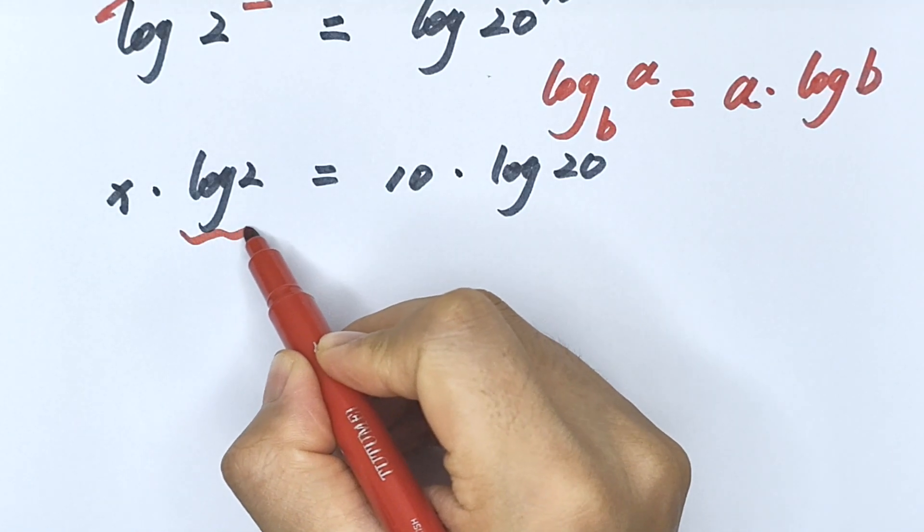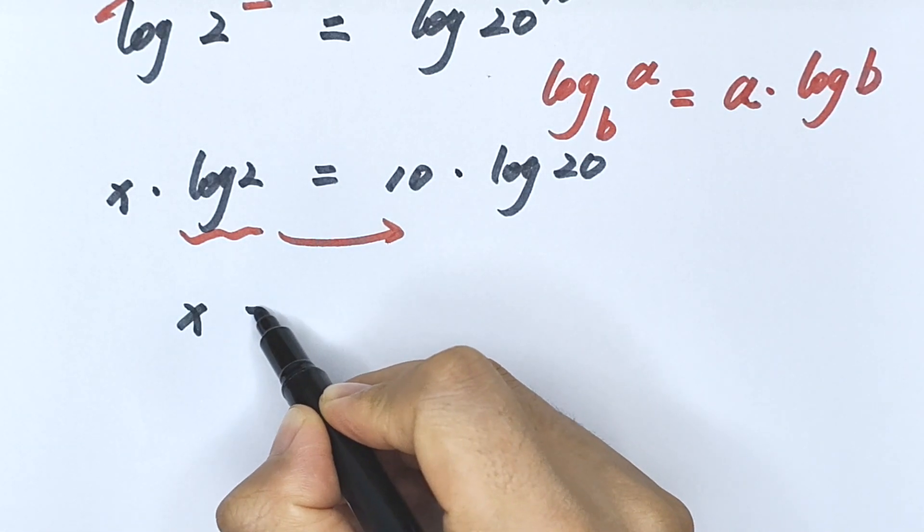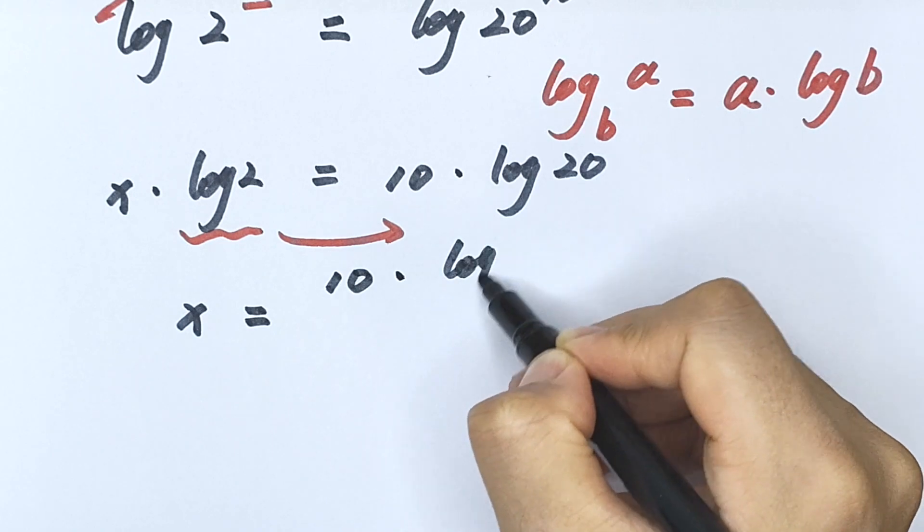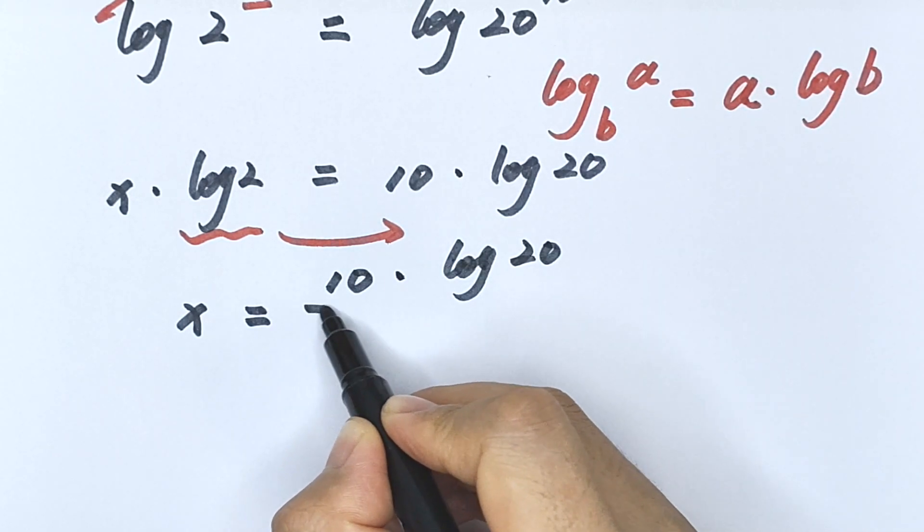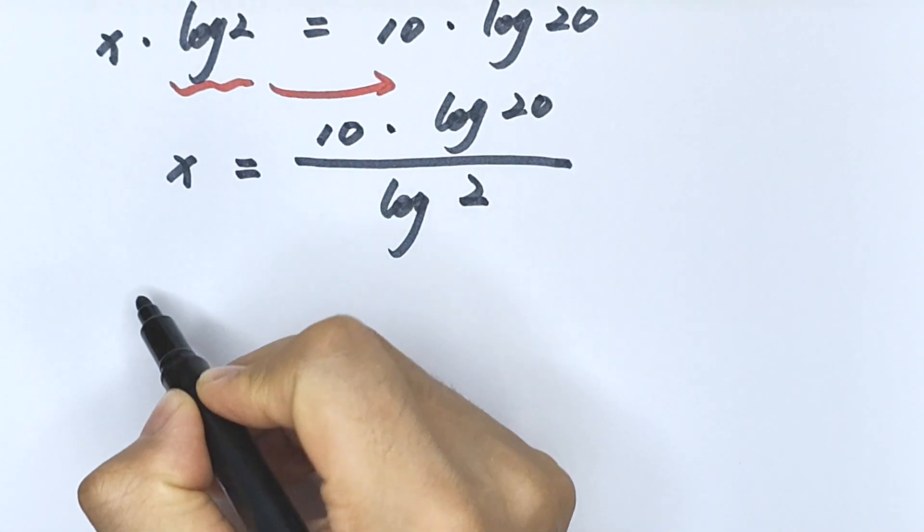Now we take this to the right side, so x equals 10 times log 20 divided by log 2.